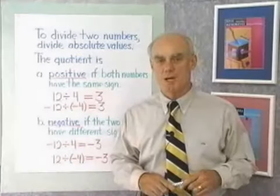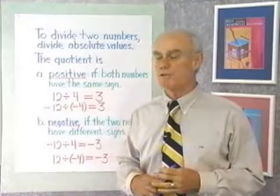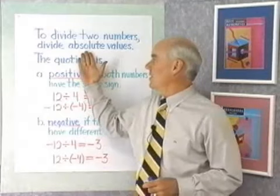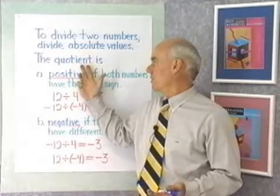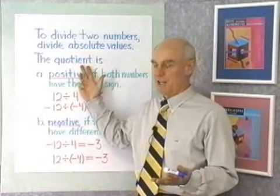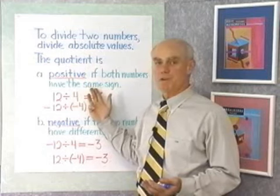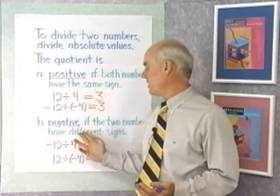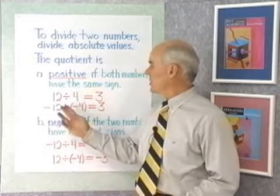The rule for division of positive and negative numbers is the same as the rule for multiplication. To divide two numbers, we divide absolute values. The quotient — that is, the answer — is positive if the two numbers have the same sign, and negative if the two numbers have different signs.